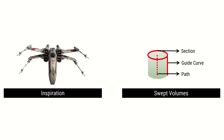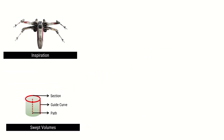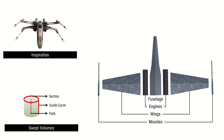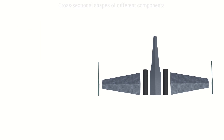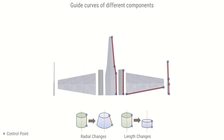Using spaceships as a design context and swept volumes as a geometric representation, we create a multi-component spaceship template that can be modified by changing the cross-sectional shapes of the components, changing the dimensions, or by adding and removing new components in a constrained manner.